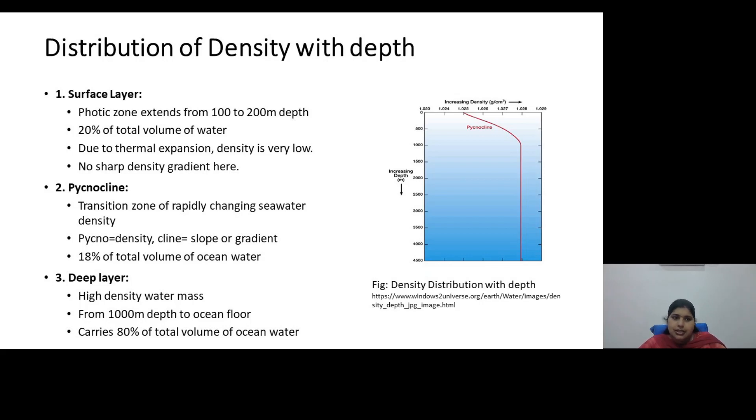And the last layer is the deep layer or the bottom layer which has a very high density water mass and comprises about 80% of the total mass of ocean water. This deep layer begins from about 1 kilometer below the surface and is reaching up to the ocean shore bed.